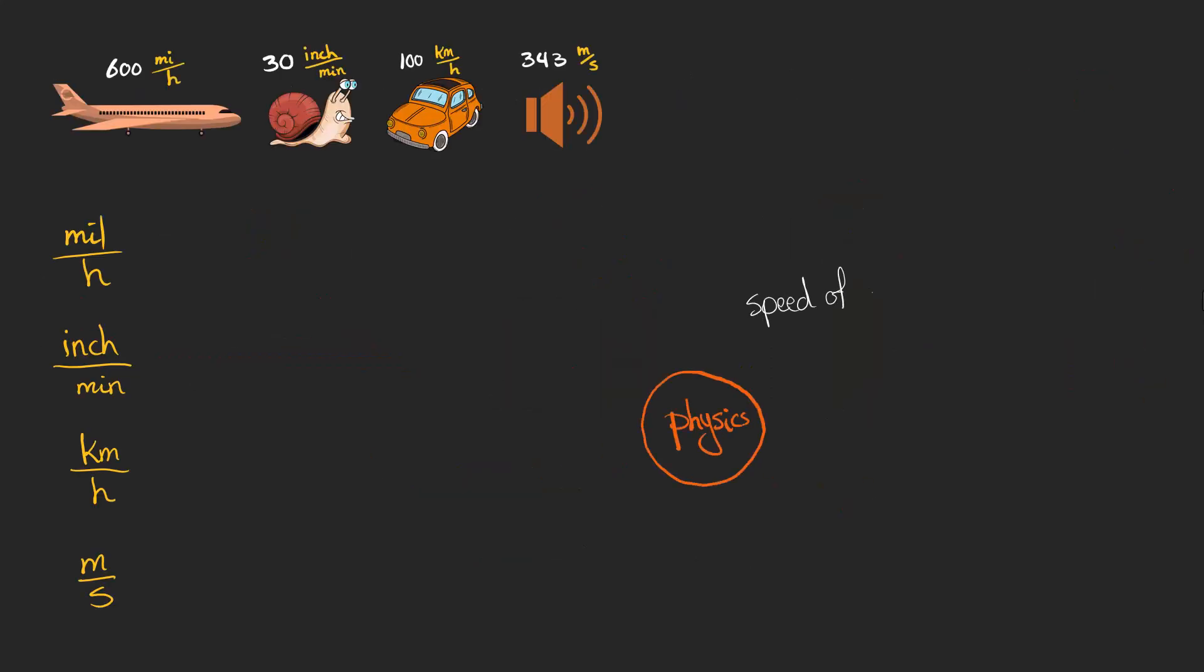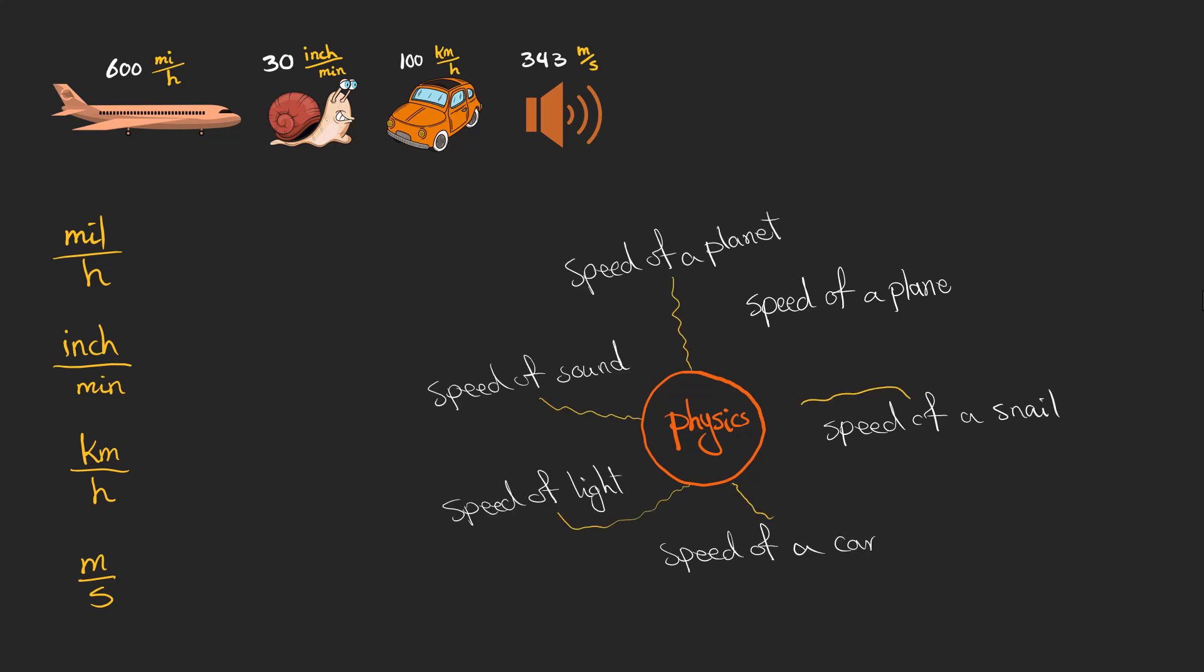All of these scales are used in everyday life to talk about the speed of an object or an animal or anything. But in physics, we need a kind of reference scale so that when we talk about speed, we know in which scale we are writing our numbers.